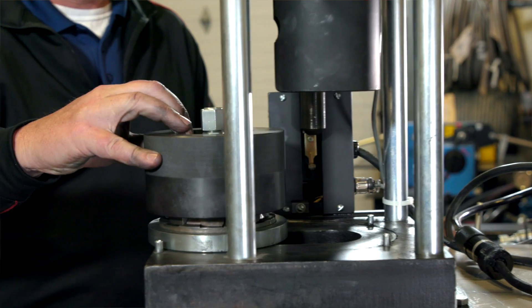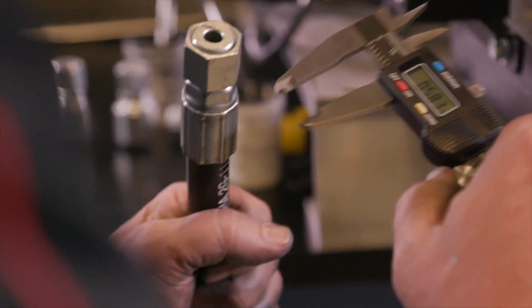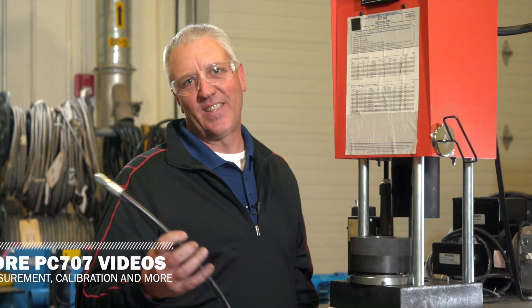Move the die cone and backup ring unit all the way forward and remove the assembly. Check and measure crimp diameter. It's that easy.